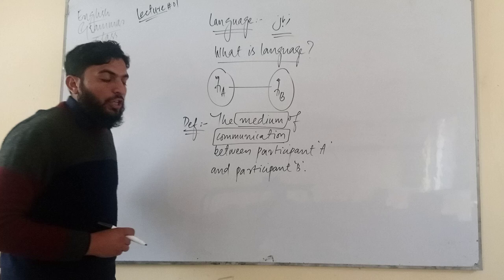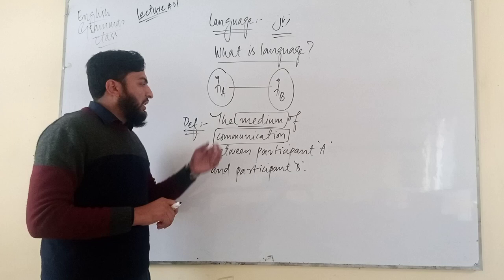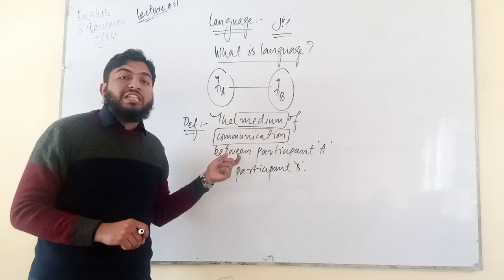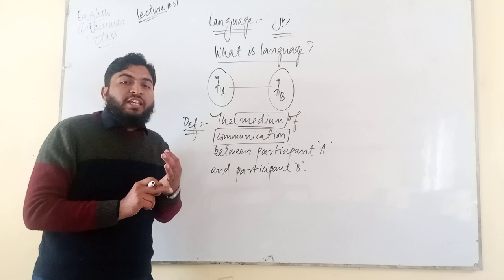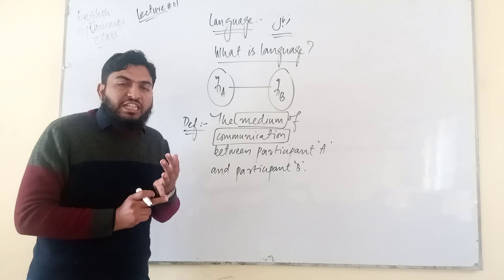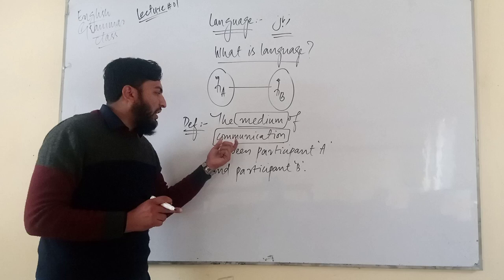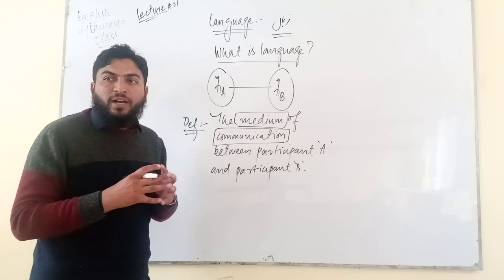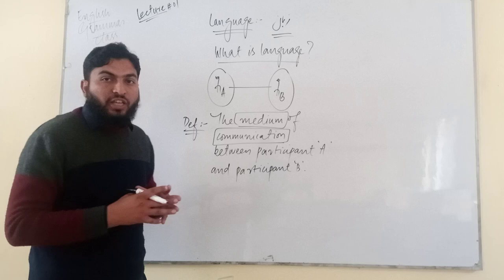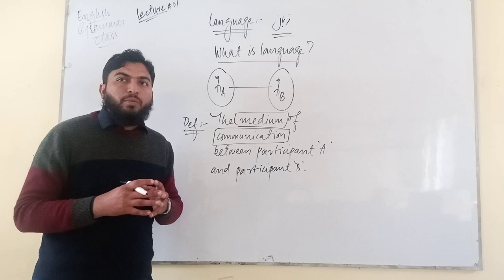What do we mean by the word communication? So let me define it once again - language is defined as the medium of communication between participant A and B. Participant A حصہ دینے والا - A means کوئی بھی شخص ہو سکتا ہے چاہے male ہو چاہے female. Between participant A اور participant B کے درمیان جو communication کا medium ہے communication کے لیے استعمال ہونے والے الفاظ ہیں جملے ہیں وغیرہ - تو اسی طرح ہم یہ کہہ سکتے ہیں کہ the medium of communication between participant A and participant B is called language.